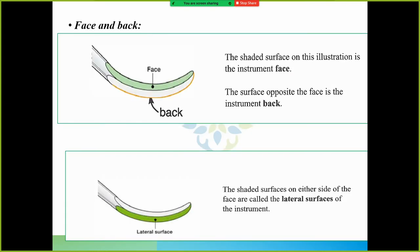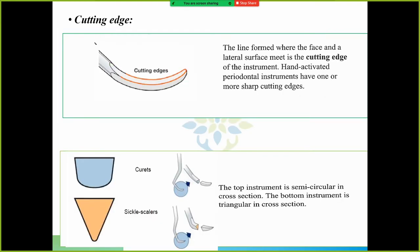Parts of the working end: This is the face, this is the back, and this is the lateral surface. You don't need to study the definition - this is the face, the upper portion; the lower portion is back; and the side portion is lateral surface. Cutting edge: The line formed where the face and the lateral surface meet is the cutting edge. So this is the cutting edge where the face and lateral surface meet. Hand activated periodontal instruments have one or more sharp cutting edges.